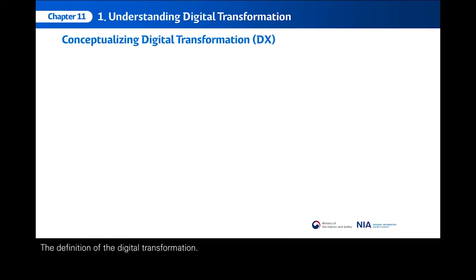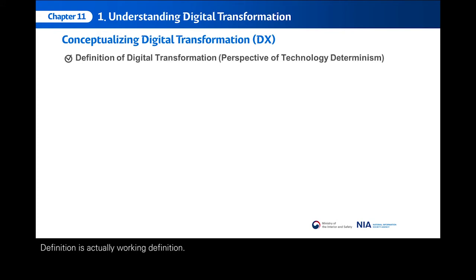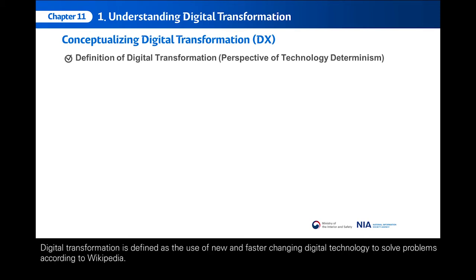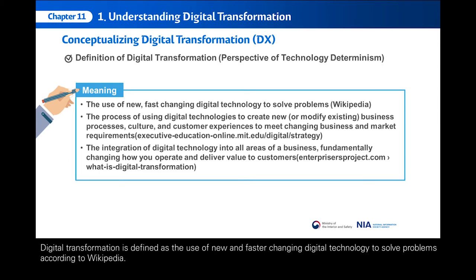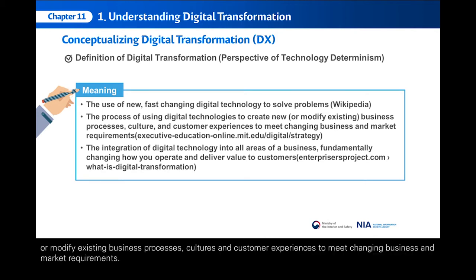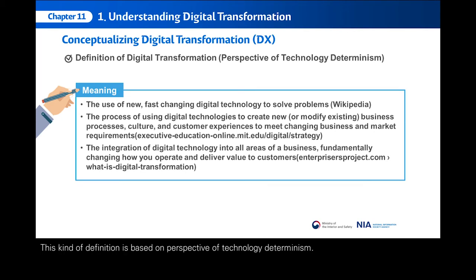The definition of digital transformation is actually a working definition. It is an ongoing phenomena, so there is no fixed definition. Digital transformation is defined as the use of new and fast-changing digital technology to solve problems, according to Wikipedia. It is also defined as the process of using digital technologies to create new or modify existing business processes, cultures, and customer experience to meet changing business and market requirements.